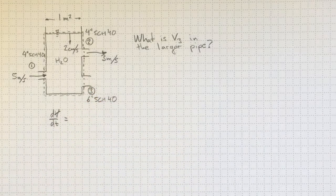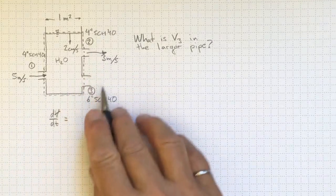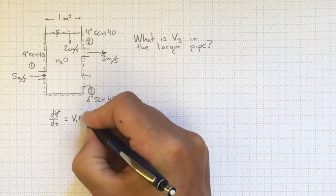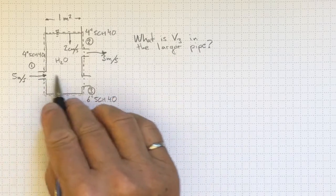So that'll be V1 A1. That's what's coming in. That would increase the amount of volume in the tank.